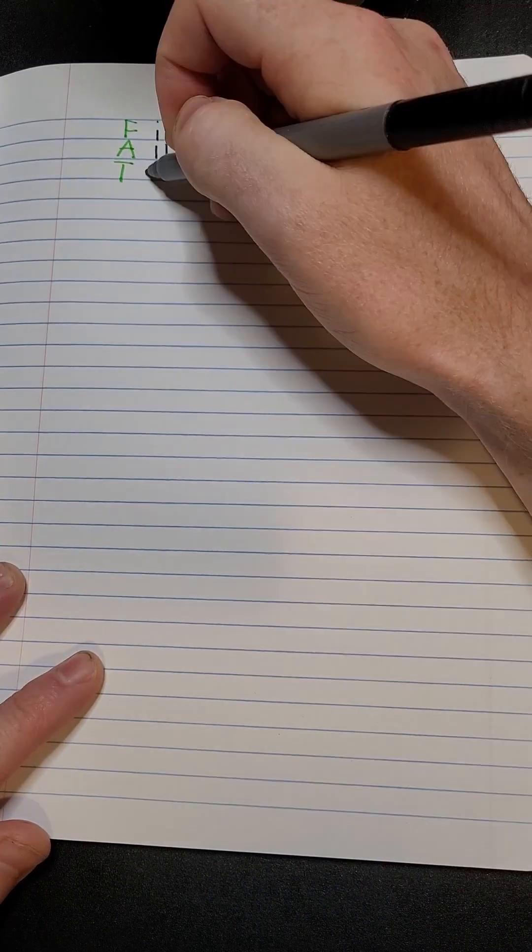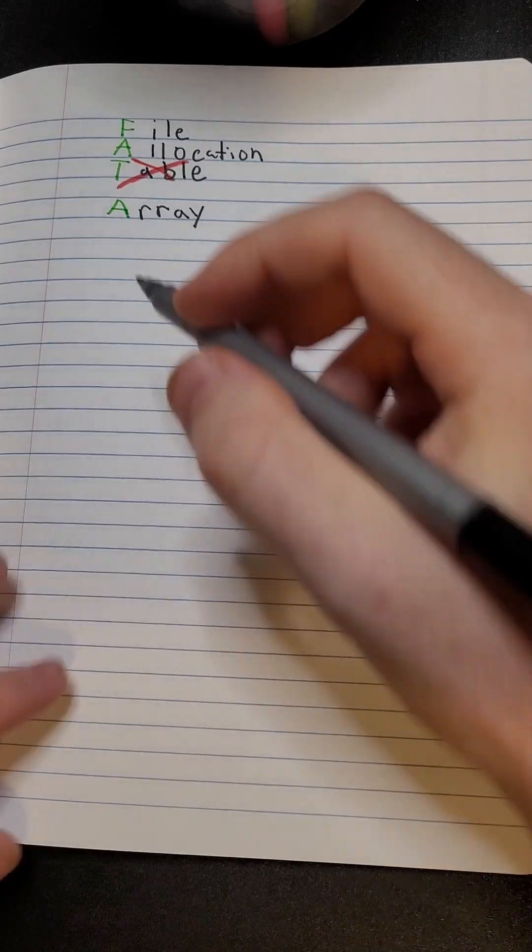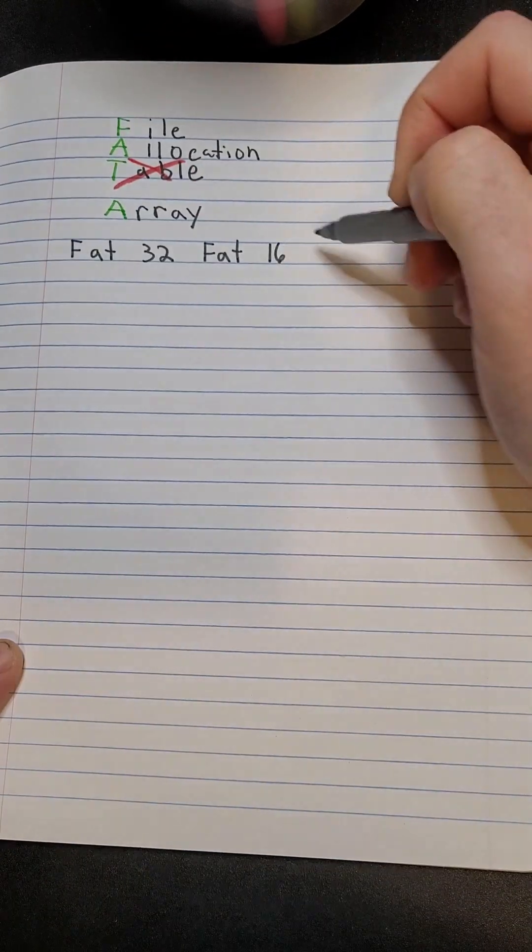FAT stands for File Allocation Table, and since we're programmers, the actual FAT table is an array. There are three sizes to that array: FAT32, FAT16, and FAT12.